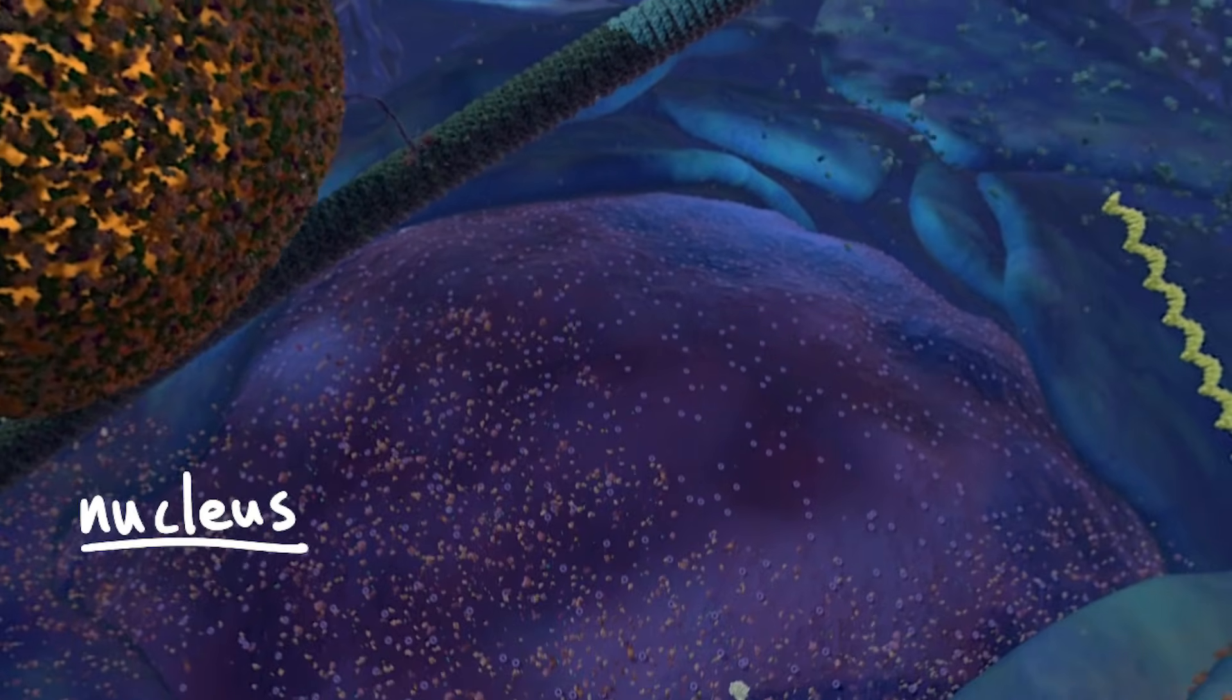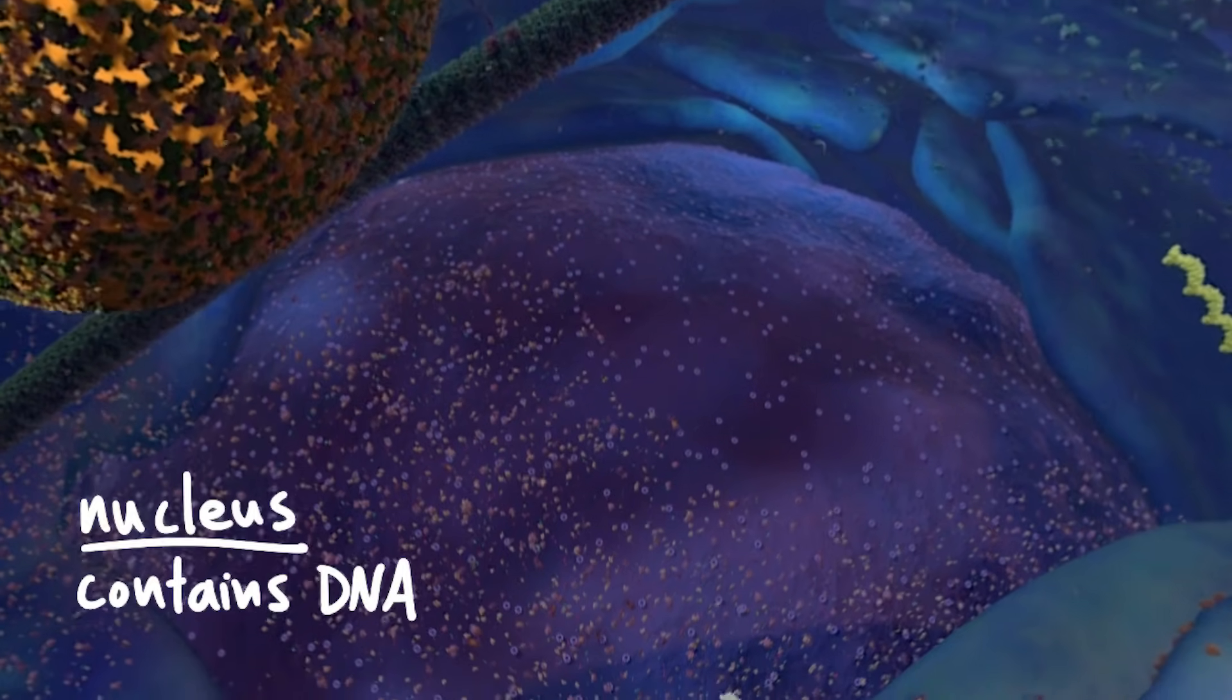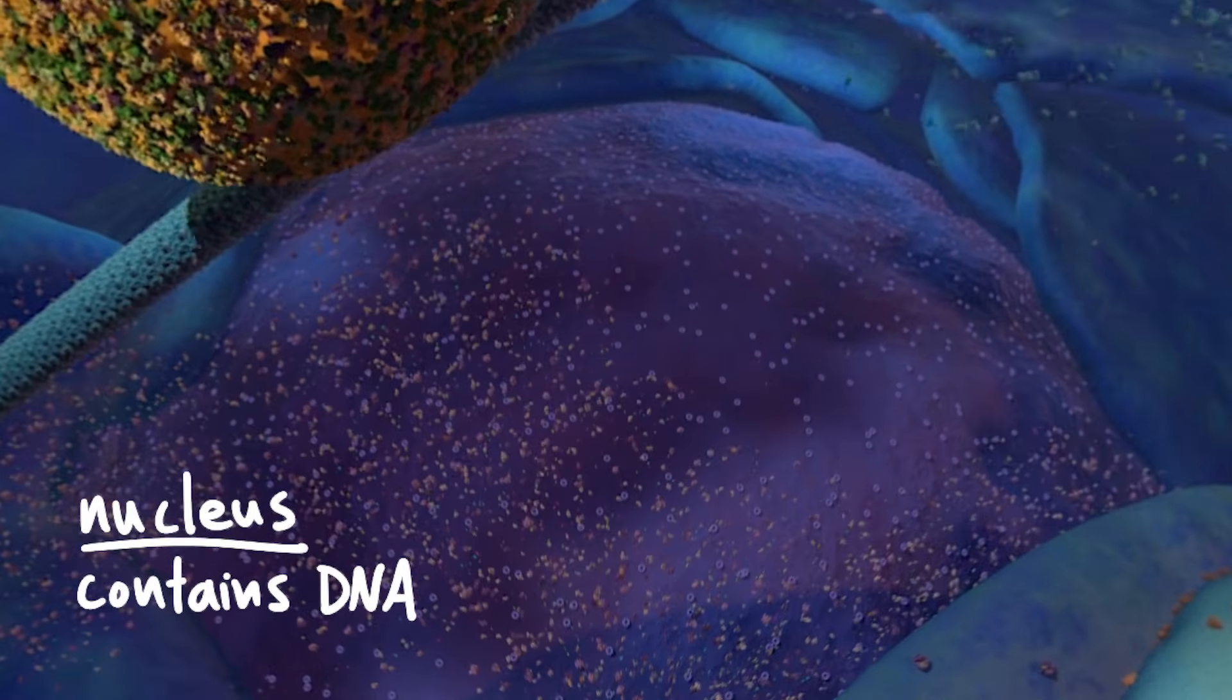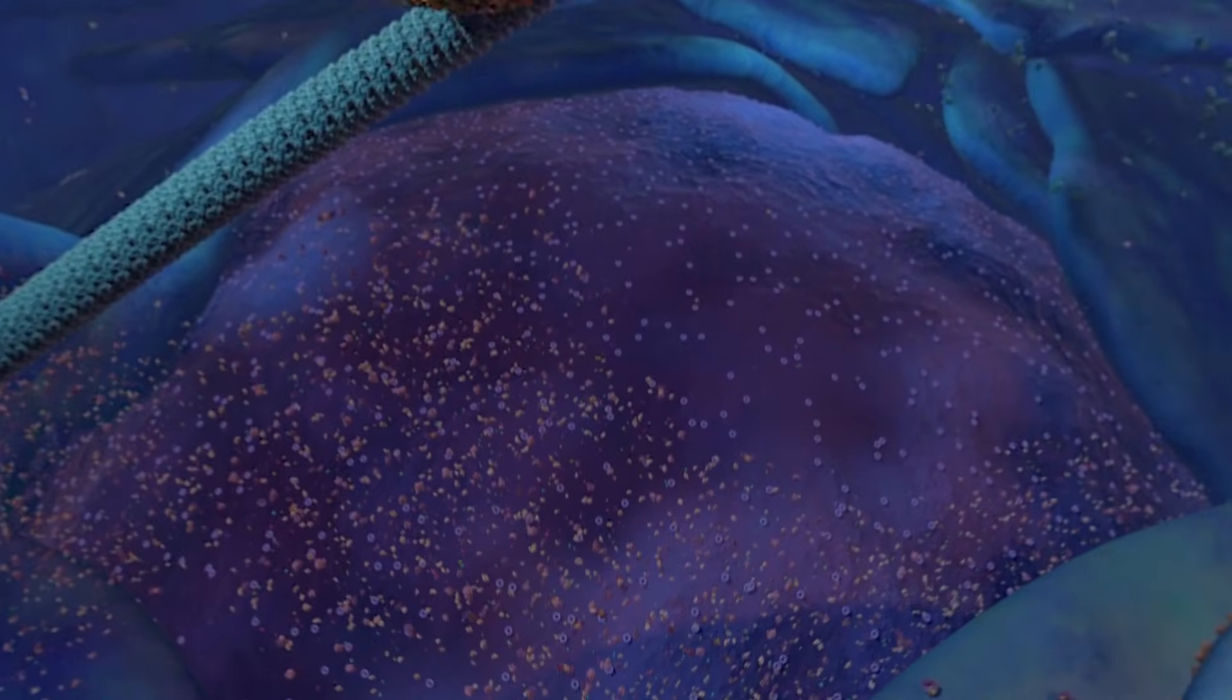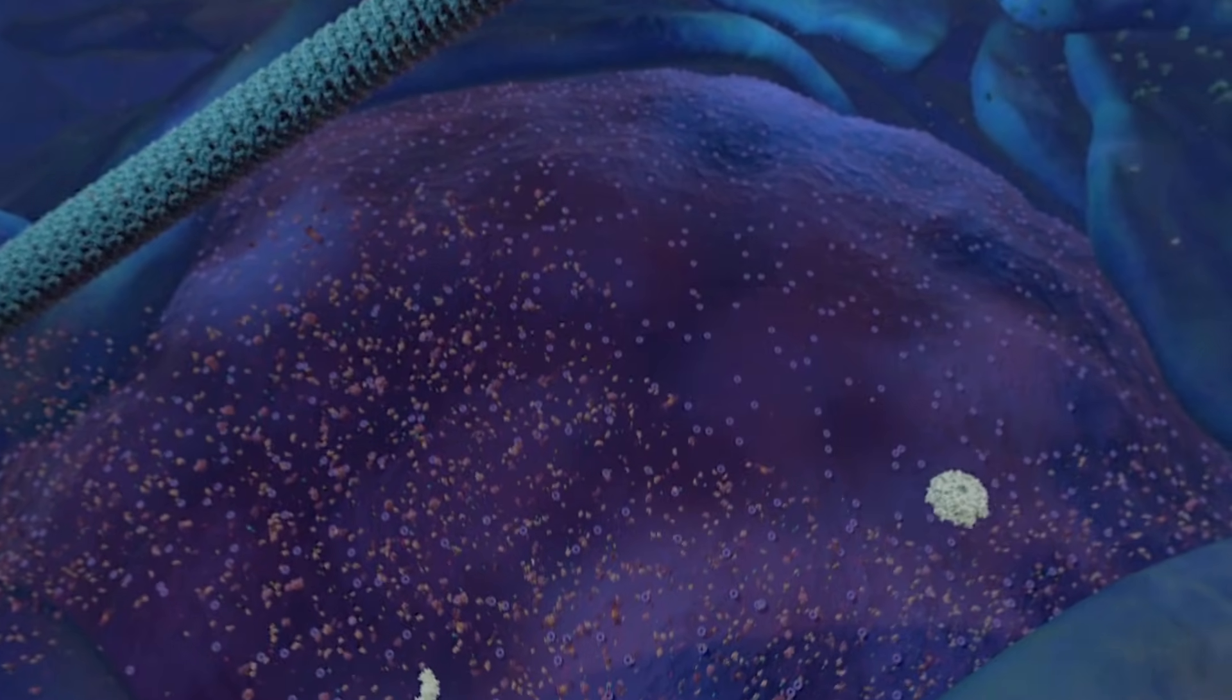If the cell needs to use a part of the DNA, it makes an RNA copy of it and then that copy can leave the nucleus and enter the cytoplasm. RNA is like a disposable copy of part of the DNA.